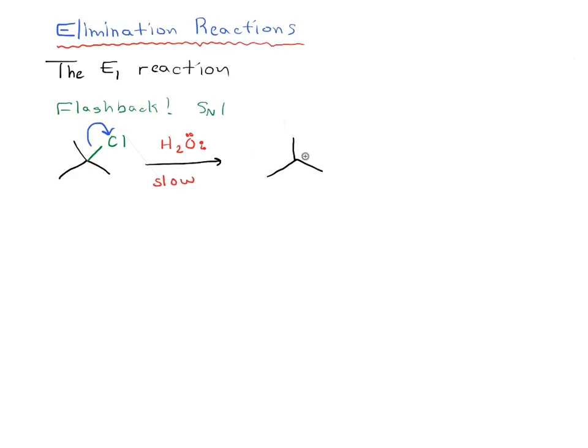This gives us a carbocation because we've broken the bond between the carbon and the chlorine. This gives us Cl minus with an extra lone pair on our chloride. Now that we have our carbocation, we have another molecule of water which can come in, and this lone pair from our oxygen can attack the carbocation and form a carbon-oxygen bond.